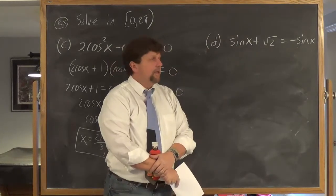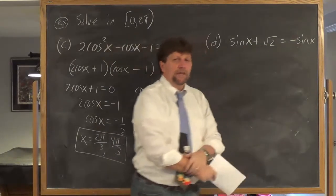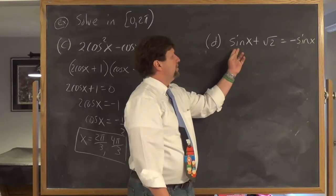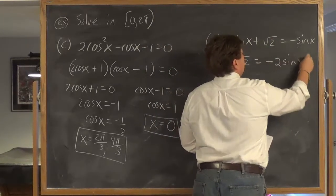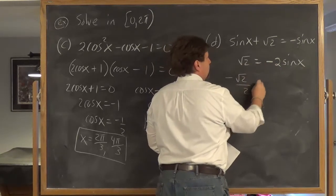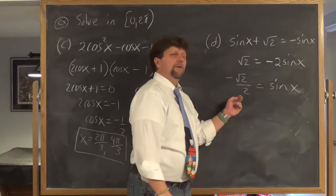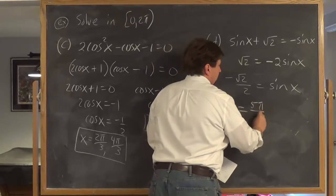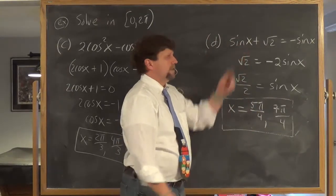For part d, sinx + √2 = -sinx. We have a trig function on each side of the equation. Similar to algebra, get them on the same side: subtract sinx from both sides to give √2 = -2sinx. Divide both sides by -2 to get sinx = -√2/2. That occurs at 5π/4 and also at 7π/4 — those are the two solutions to the original equation.